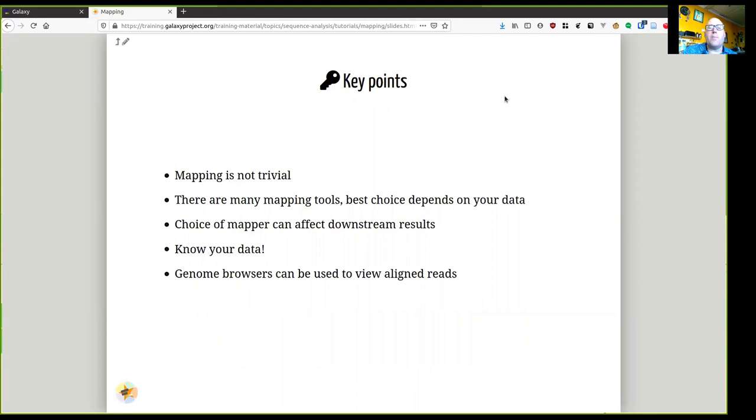So what are the key points of our discussion thus far? Mapping is not a trivial problem. There are many mapping tools. The best choice depends on your data. The choice of your mapper can affect your downstream results. So that's why you need to know your data and you need to know which mappers are typically used for that data type. And finally, genome browsers can be used to view aligned reads.